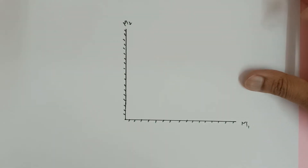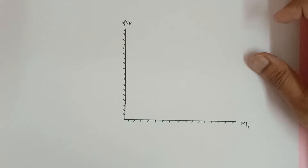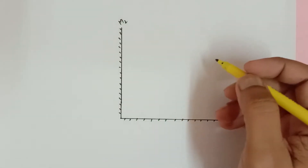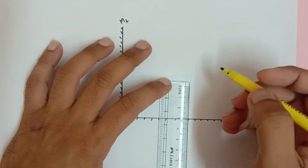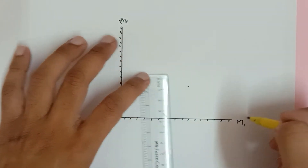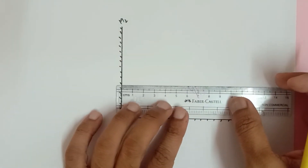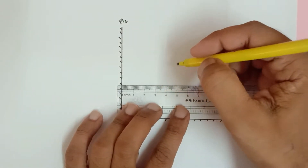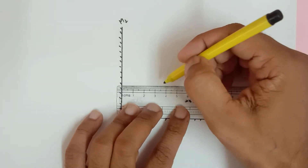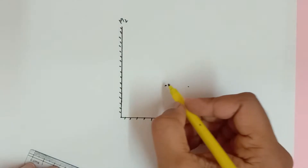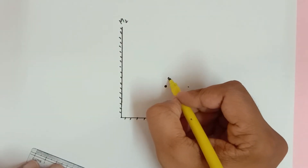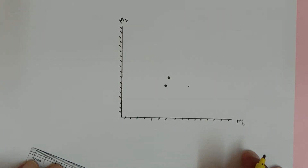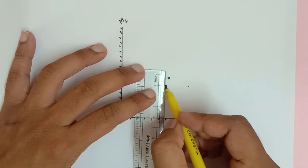In this part of the video we are going to understand the actual ray diagram method and obtain all the images. First, I am going to keep the same object at a distance of three centimeters away from mirror M1 and four centimeters away from mirror M2. This object O is located at three centimeters from M1 and four centimeters from M2. Now we would be pulling out two rays.